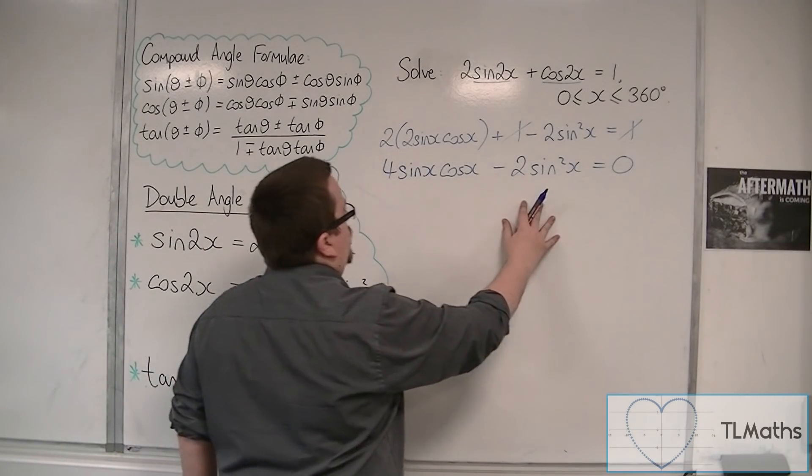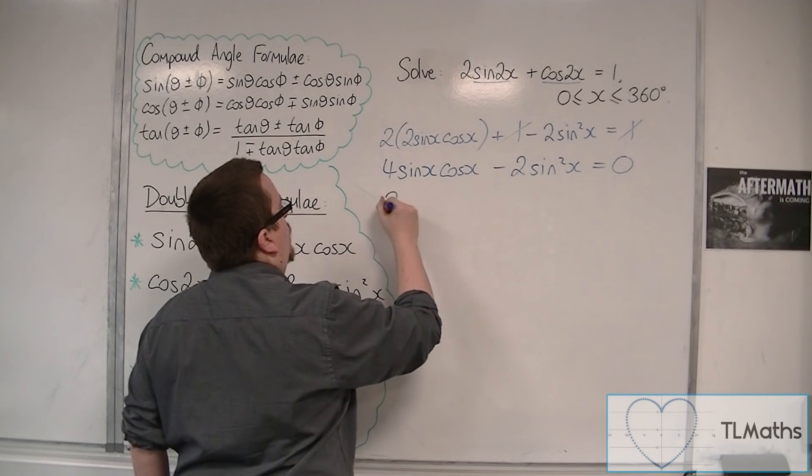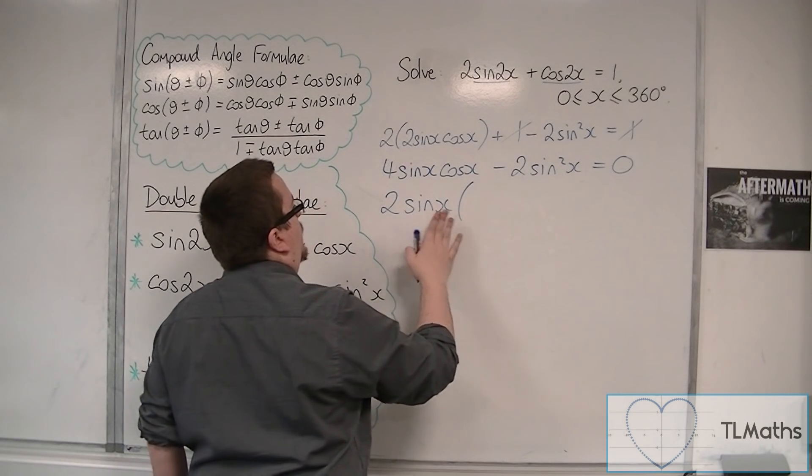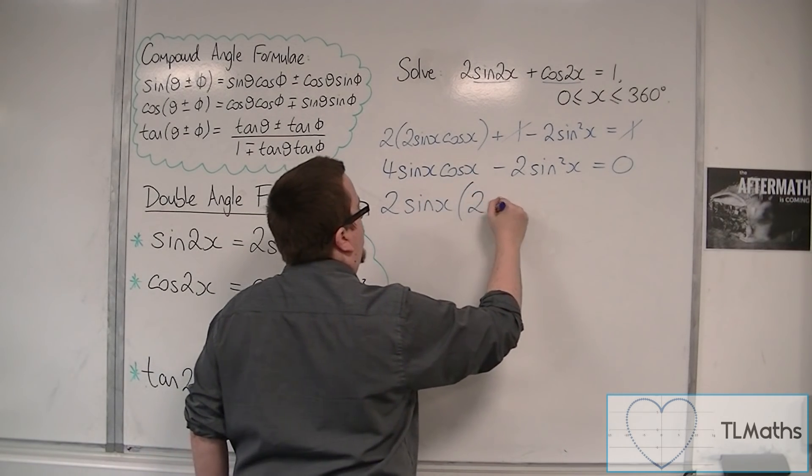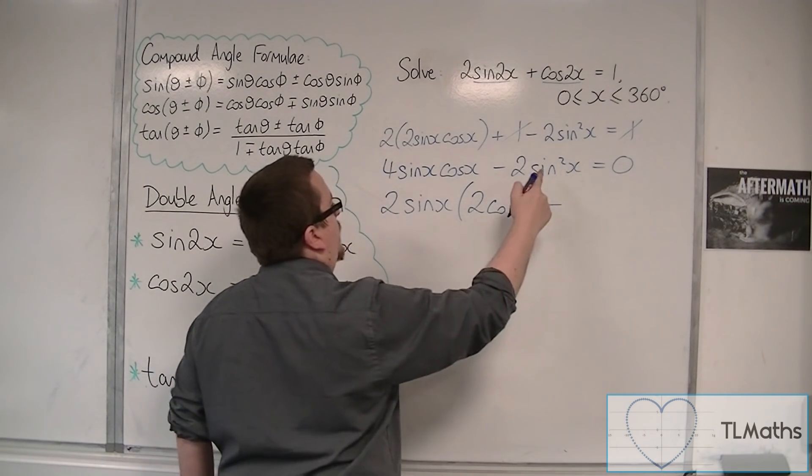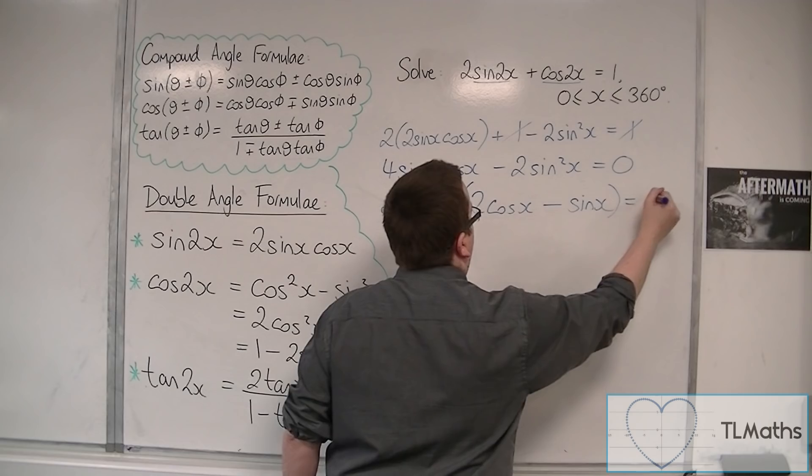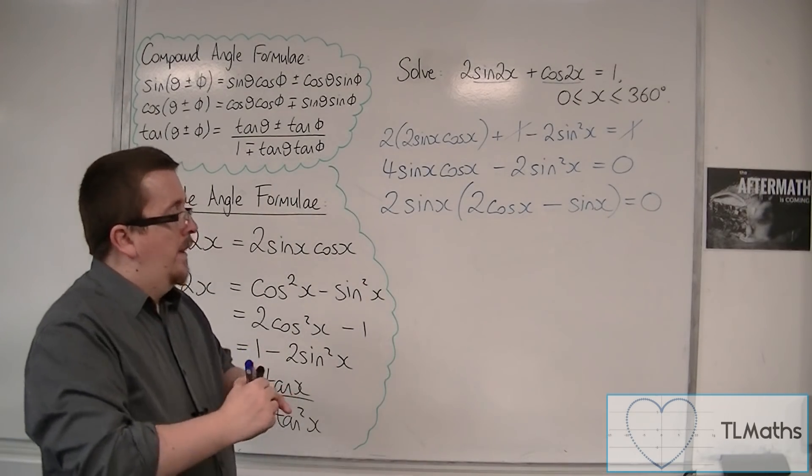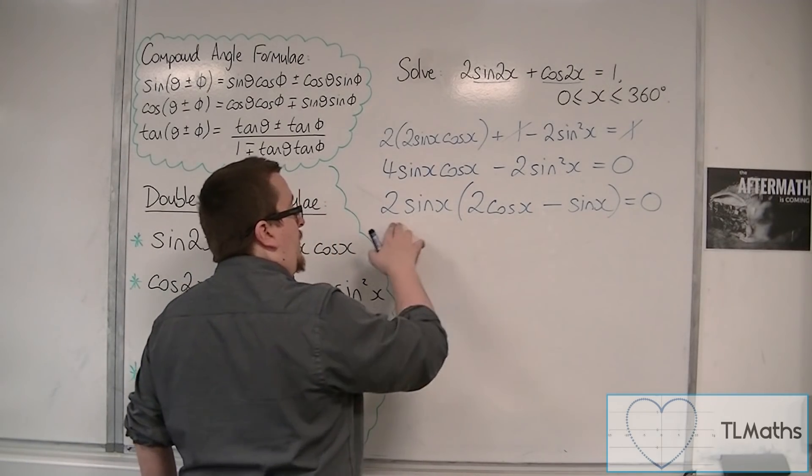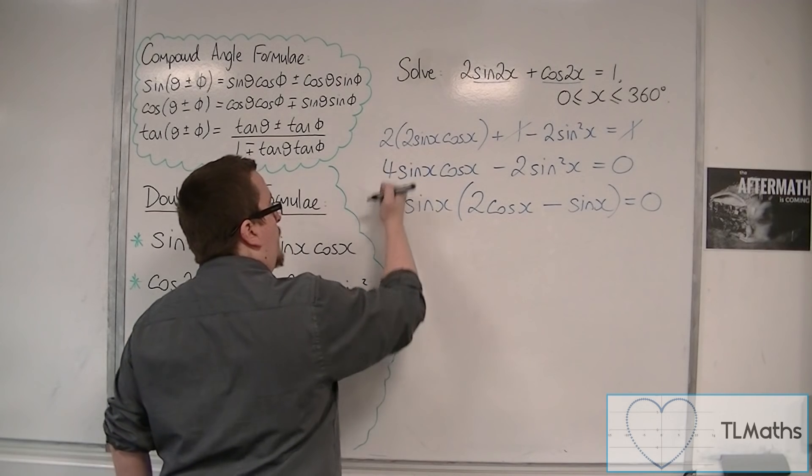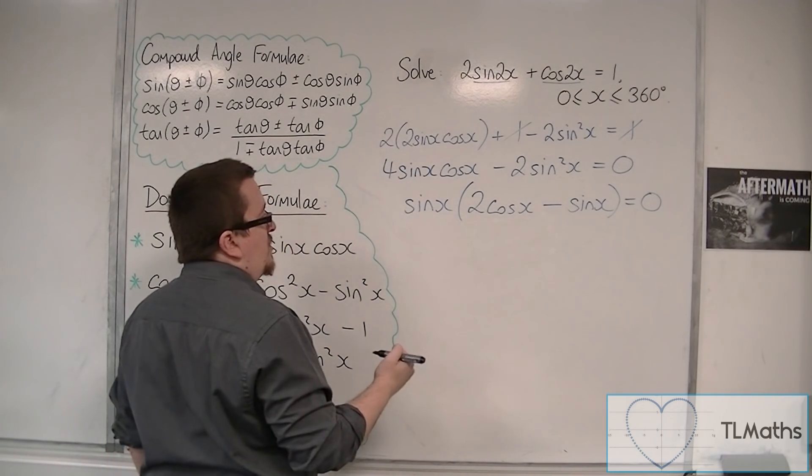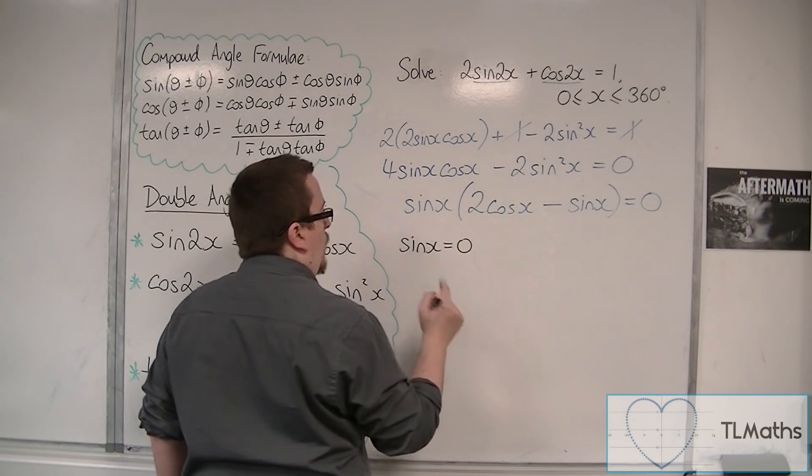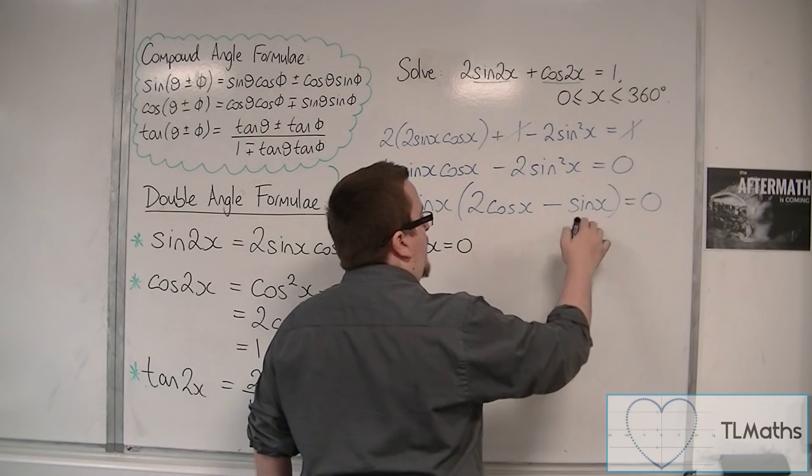Now, let's factorize this. We have 2 lots of sin(x), because sin(x) is common to both, times 2 lots of cos(x), take away sin(x). So, either the sin(x) is 0, because clearly the 2 can't be. I could divide both sides by 2, if I like, and that just gets rid of the 2. Sin(x) = 0.